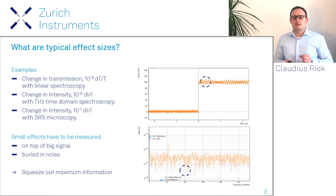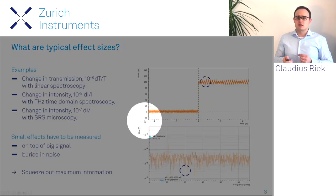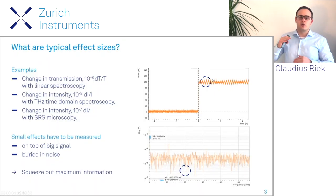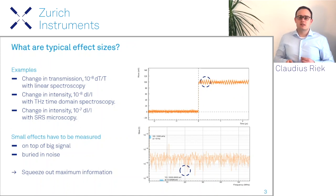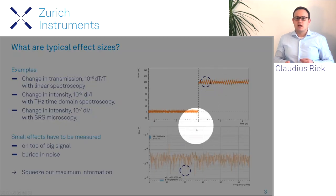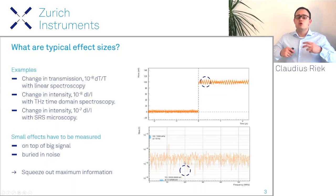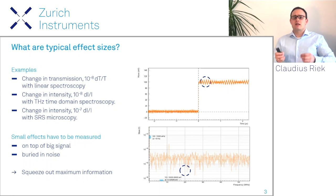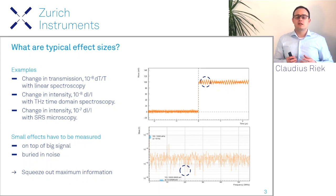With linear spectroscopy, we can easily measure down to 10⁻⁸ in transmission change, or we measure a change in the terahertz light field which induces a refractive index change of only 10⁻⁸ as well. Similar results hold for SRS microscopy — the changes are really minute. And this small effect we measure on top of sometimes a large signal, or we want to measure a signal deeply buried in noise. It is crucial to minimize the measurement time and squeeze out the maximum information from the signal.